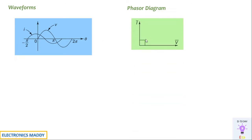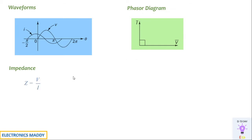With respect to the phasor diagram, as considered for a pure resistor and inductor, the reference is always the voltage, indicated in the horizontal direction. Since current leads the voltage by 90°, the current i is indicated in the upward direction — the perpendicular position relative to the reference — because it is leading. If it were lagging, it would be in the downward direction, as is the case for an inductor.